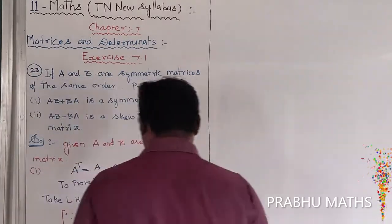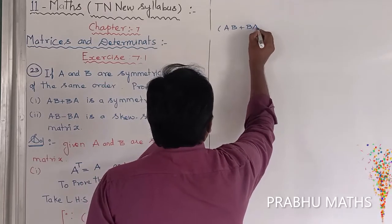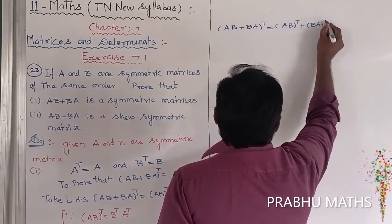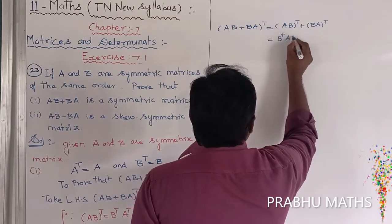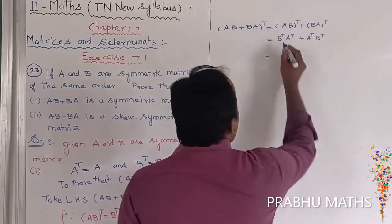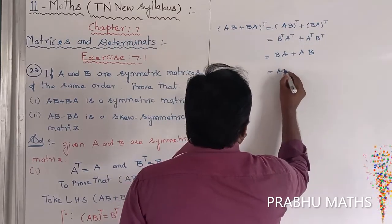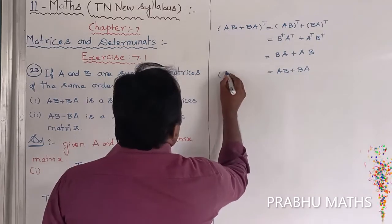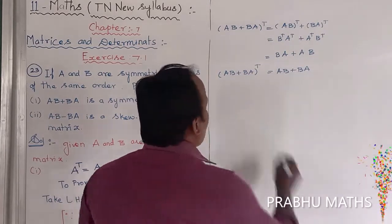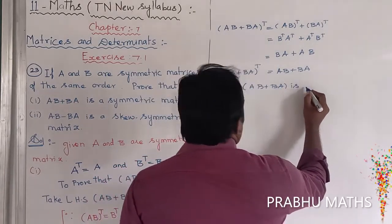So AB plus BA the whole transpose equals AB the whole transpose plus BA the whole transpose, which equals B transpose times A transpose plus A transpose times B transpose. Substituting A transpose equal to A and B transpose equal to B, this gives BA plus AB, which equals AB plus BA. Therefore, AB plus BA is a symmetric matrix.